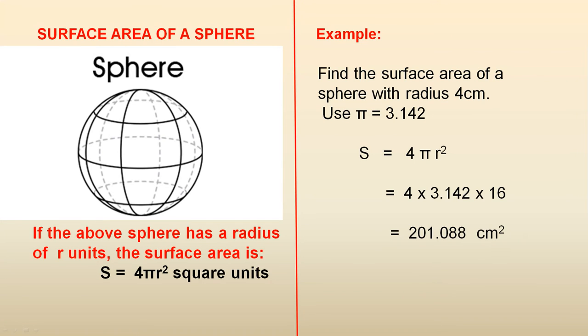The surface area of a sphere. If the above sphere has a radius of r units, the surface area is 4 pi r squared square units.